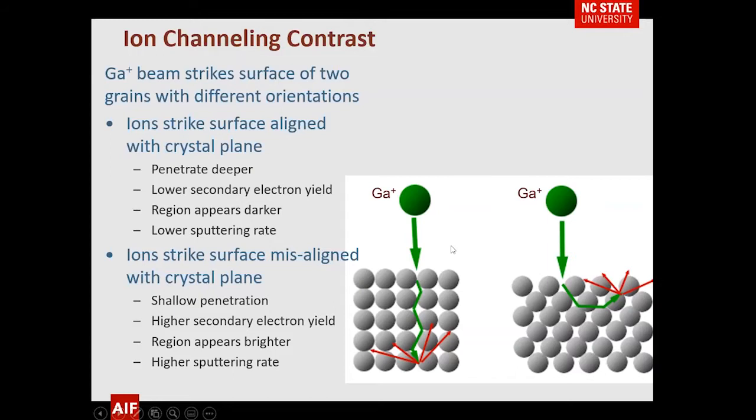So we have deeper penetration on the left and shallower penetration on the right. As a result, the electrons close to the surface on the right will appear brighter. In addition, collisions near the surface mean the misaligned grain will sputter at a higher rate — it will be brighter and sputter faster.